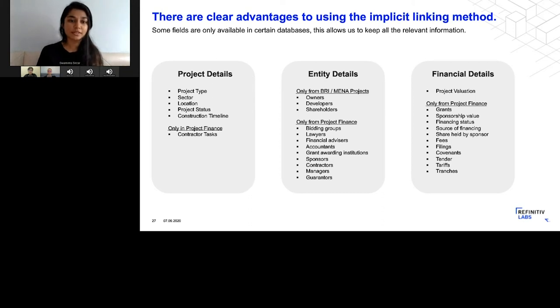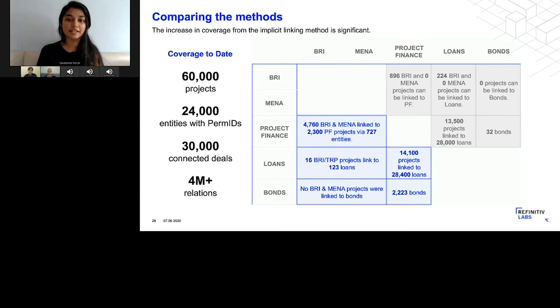Now to just compare the two methods, let me show you what that breakdown actually looks like. Using the implicit linking method, which you see in blue, we got 550% more projects and entities identified. In gray, you see the original explicit linking method using the existing fields. You can really see that by using the knowledge graph method, by pulling out all of these entities and then linking them together with whatever information was already there in the knowledge graph, we were able to come up with a much richer and much more context-heavy dataset that's then a lot more useful to an infrastructure investor.